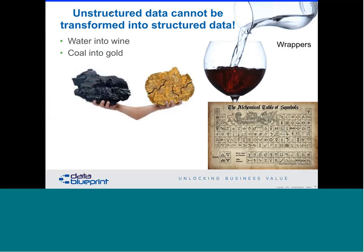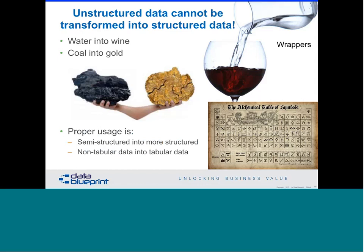Unstructured data is very difficult to transform into a usable format. As the wine glass analogy shows, what we're actually doing with unstructured data is adding boundaries — the data is not transformed, but the material can now at least be handled. So really, somebody who tells you they're going to take your unstructured data and turn it into structured data — hand them a glass of water and ask them to turn it into wine. The proper way to describe this is non-tabular data versus tabular data, which is realistic and can be done.